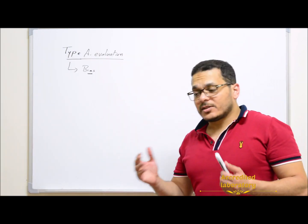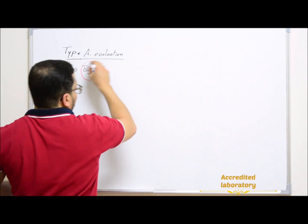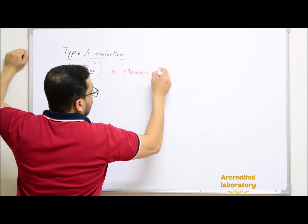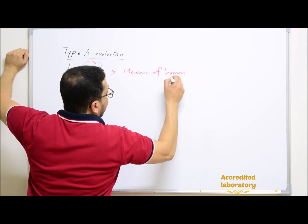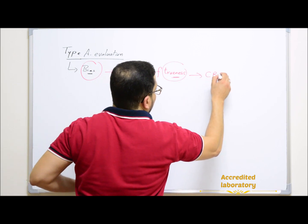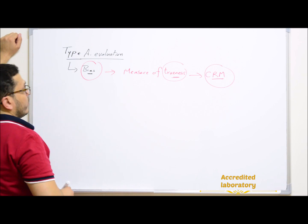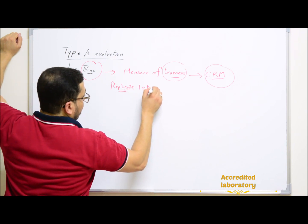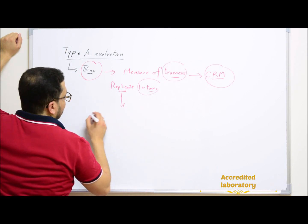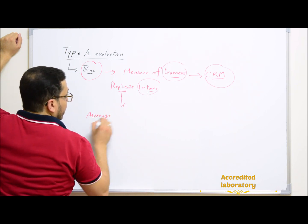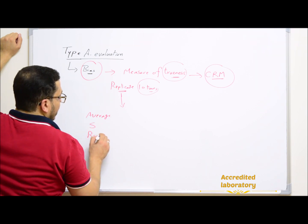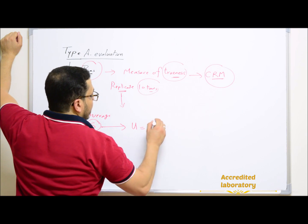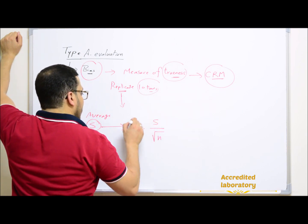Uncertainty due to bias — bias is a measure of trueness. In this case, it is best to use a Certified Reference Material (CRM). You will use the CRM and make replicate analyses, preferably 10 times. Then calculate the average, standard deviation, and relative standard deviation. From the standard deviation, you calculate the standard uncertainty, which equals the standard deviation divided by the square root of n.